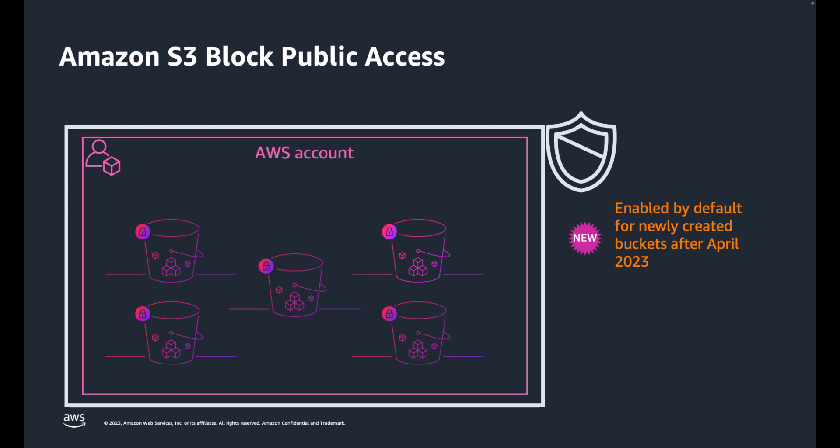Amazon S3 buckets are, and always have been, private by default. Only the bucket owner can access the bucket or choose to grant access to other users. Amazon S3 added block public access in 2018 to prevent granting public access to S3 buckets, and the ability to disable ACLs, or access control lists, in 2021, in favor of using AWS Identity and Access Management, or IAM, policies as a simplified and more flexible access control alternative.